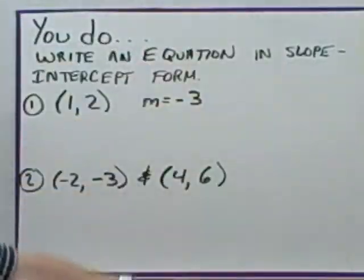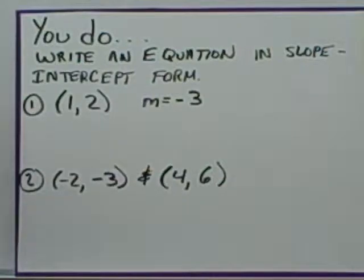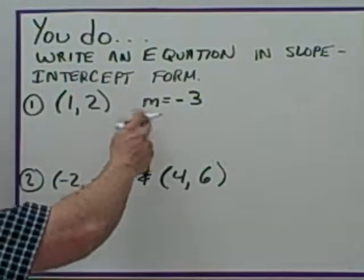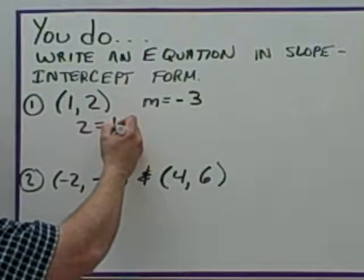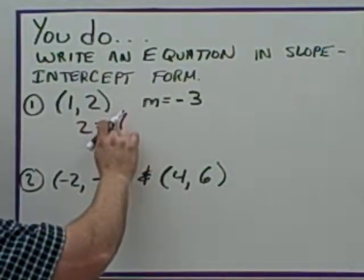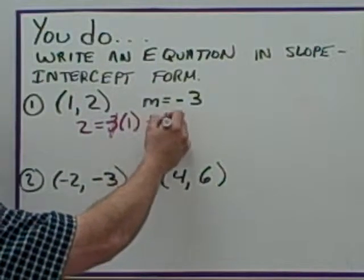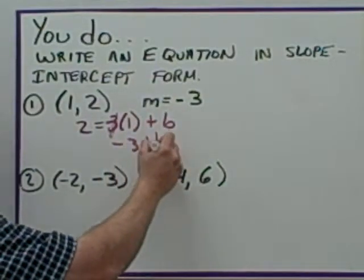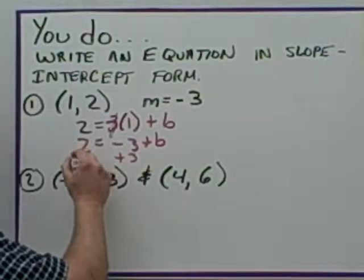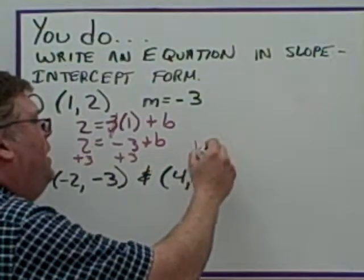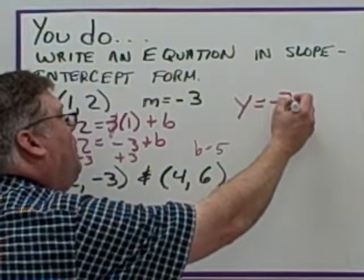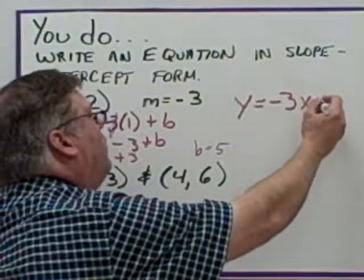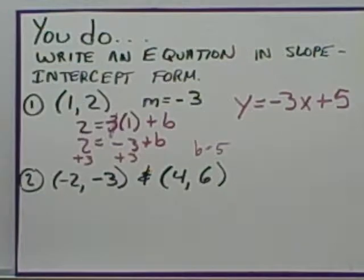Alright, a couple more practice problems — try these two, pause the video and we'll come back. Welcome back. For the first one, writing an equation in slope-intercept form using y equals mx plus b: plugging in y equals 2, slope equals negative 3, and x equals 1. That gives negative 3 plus b equals 2, so b equals 5. The equation is y equals negative 3x plus 5.